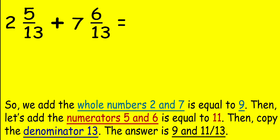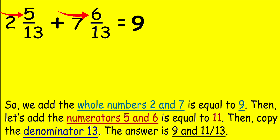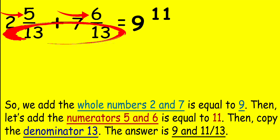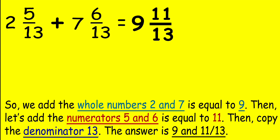For example, 2 and 5/13 plus 7 and 6/13. We add the whole numbers: 2 and 7 is equal to 9. Then, let's add the numerators: 5 and 6 is equal to 11. Then, copy the denominator 13. So, the answer is 9 and 11/13.